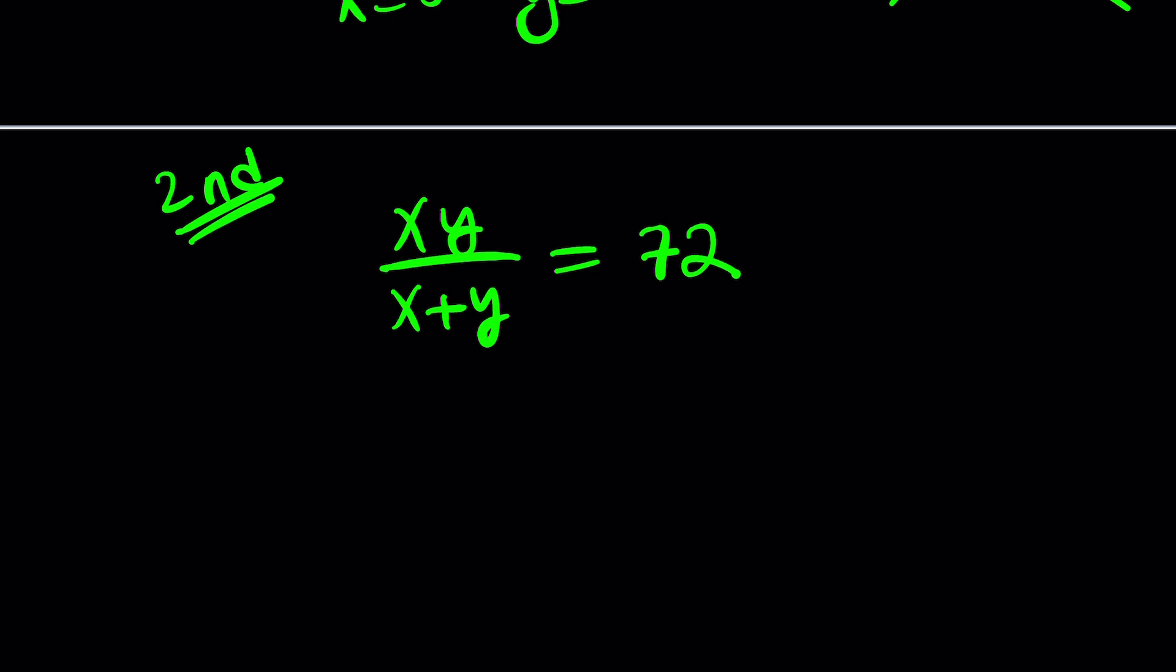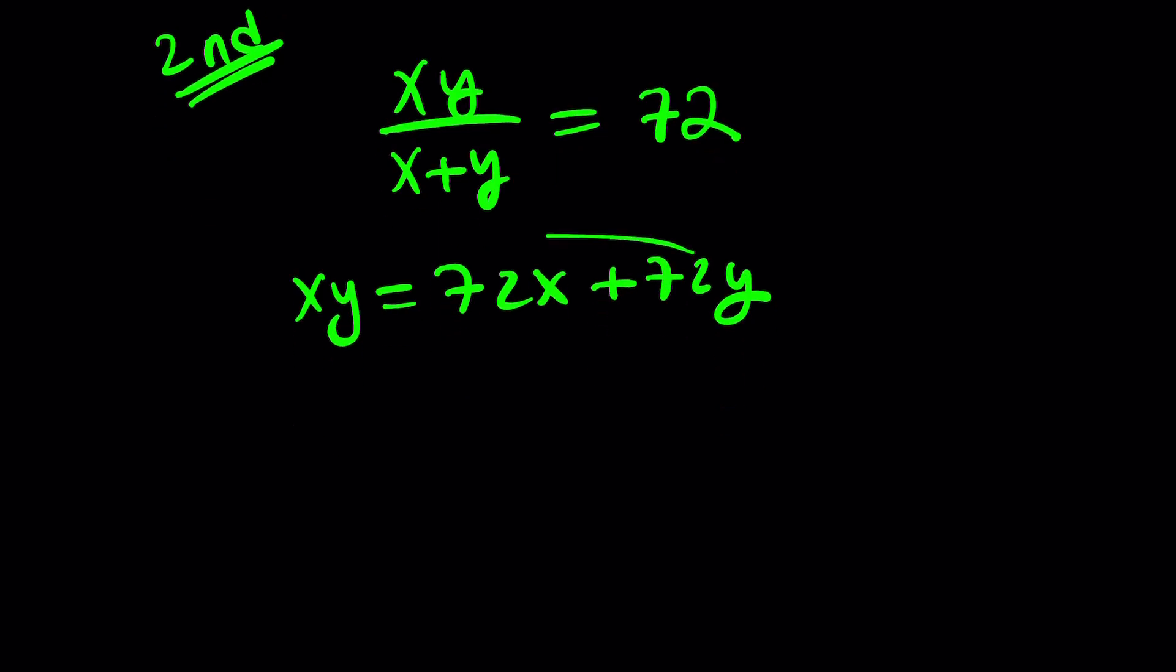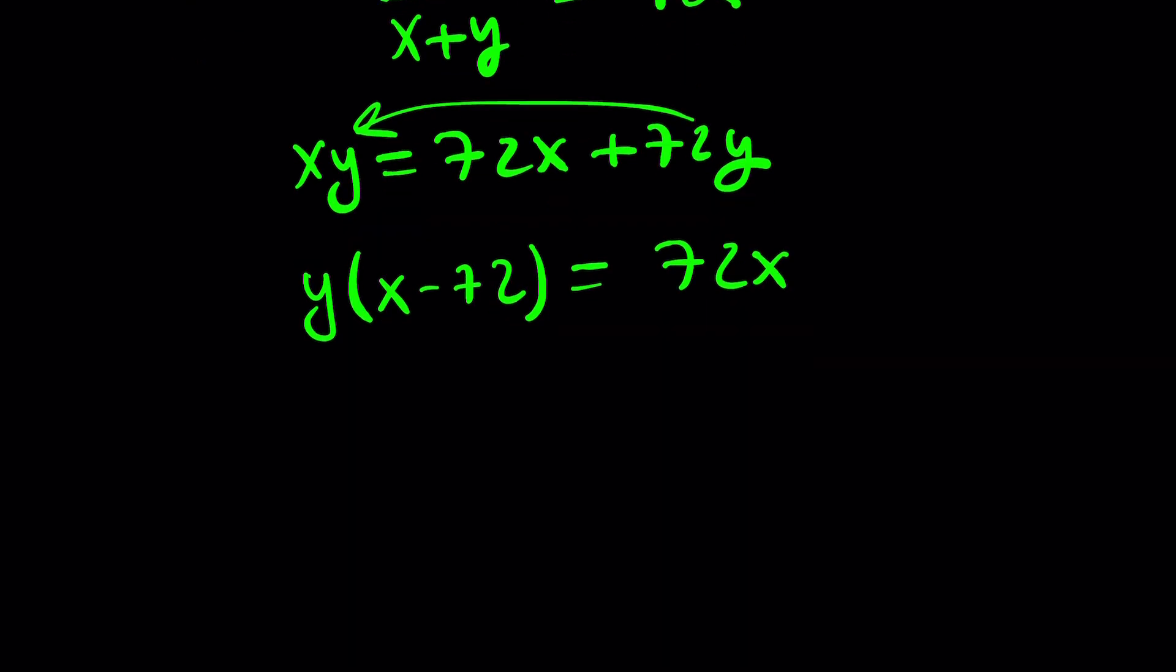So a second way to approach this problem could be something like this. You could try to solve for y. First of all, you kind of have to cross-multiply here. And then since you're trying to solve for y, why don't we bring these two terms together? Factor out y, you're going to get x minus 72, and then 72x will be on the other side.